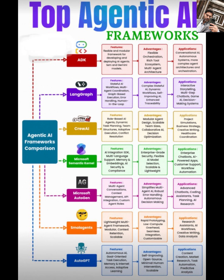Next, LangGraph. This one's a powerhouse for stateful AI workflows. It supports multi-agent coordination, graph-based execution, error handling, and even human-in-the-loop processes. What's awesome about LangGraph is its complex, stateful AI and dynamic workflows — perfect for interactive storytelling, chatbots, or decision-making systems where self-improving AI is key.